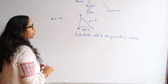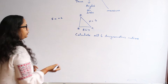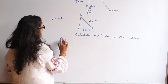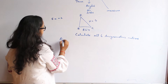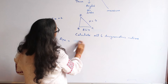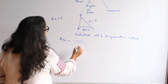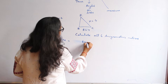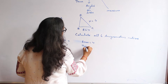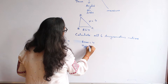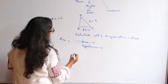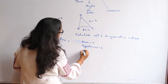Here one side is not given to us, so we can calculate it by using the Pythagorean theorem. We are given the base, which is 4, and the hypotenuse, which is 5, and we are missing the perpendicular.